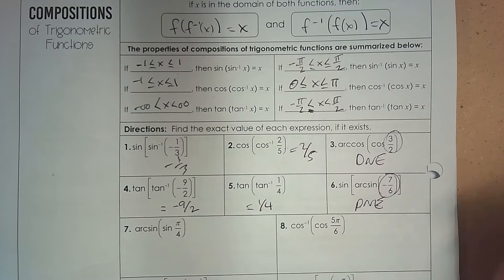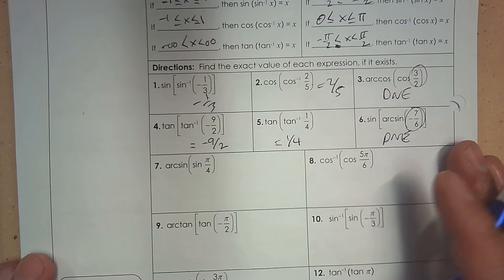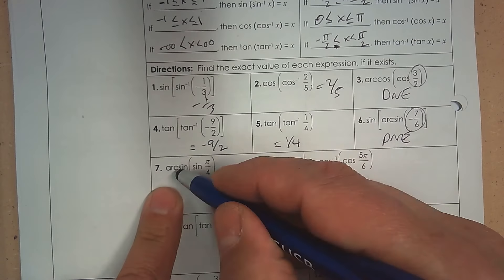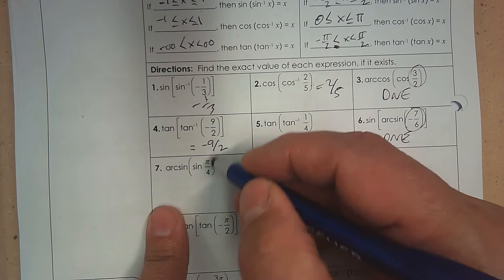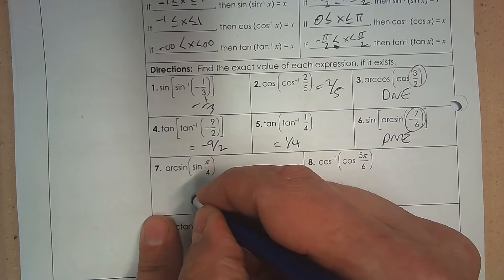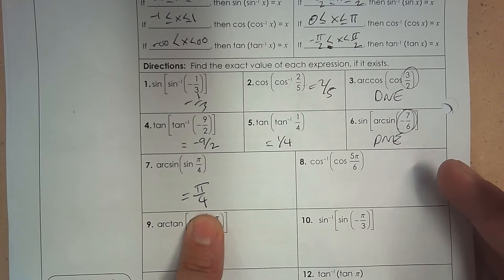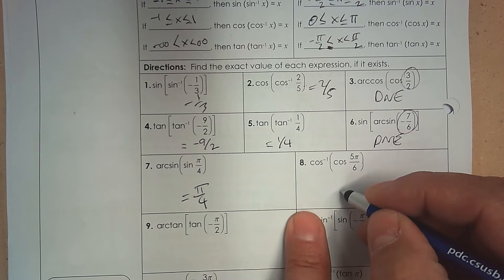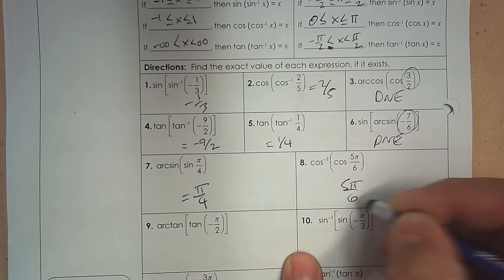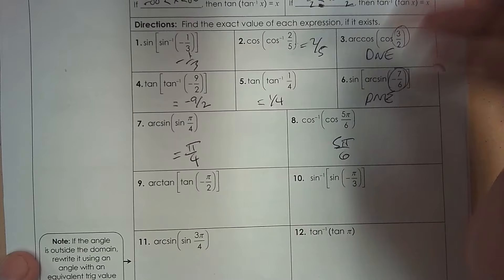Number 7: arc sine and sine of pi over 4 — do they cross out? The angle pi over 4 is good, it's within the required range, so the answer is pi over 4. Number 8: inverse cosine and cosine cross out — that's a good angle in the domain from 0 to pi — so the answer is that angle.